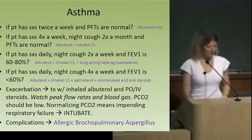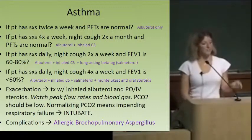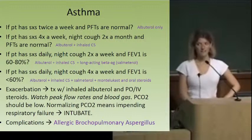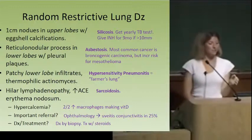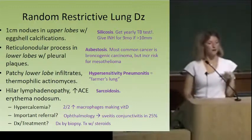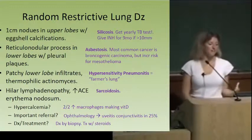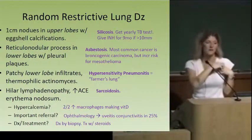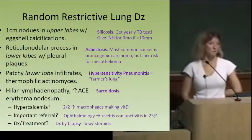Now for some restrictive lung disease. If they describe one-centimeter nodules in the upper lobes with eggshell calcifications — that's silicosis. People with silicosis are more predisposed to tuberculosis, so they need an annual tuberculosis test.